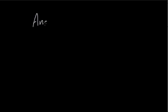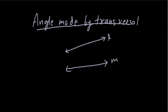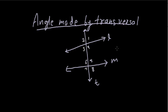Today we discuss angles made by a transversal. Let's say we have two lines, not necessarily parallel — line L and line M — intersected by a line T. This line T is called the transversal. When two lines L and M are intersected by a transversal T, this transversal will make eight angles with lines L and M.